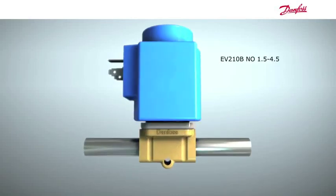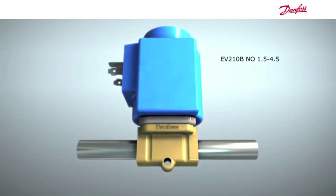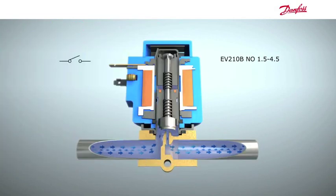Let's take a look at the inside of the EV210B normally open. When we cut away part of the valve, we can see that the coil is de-energized, the armature is in the up position, and media is flowing through freely.